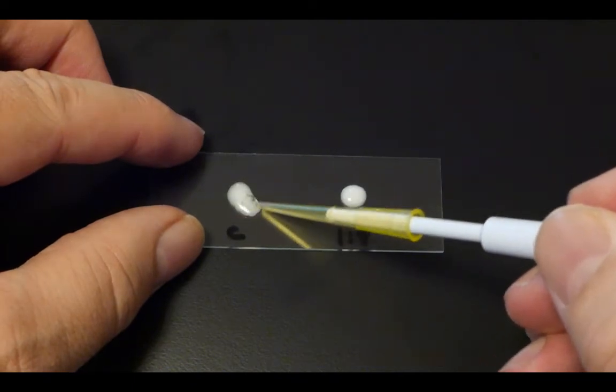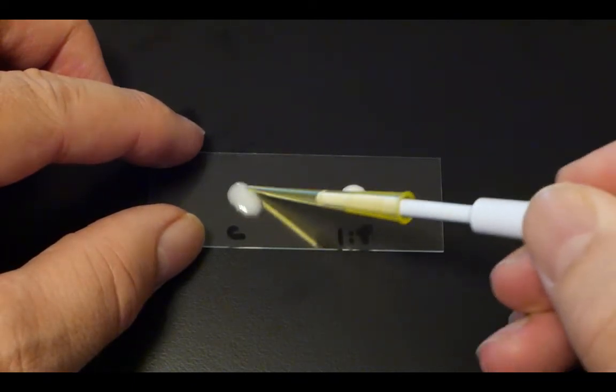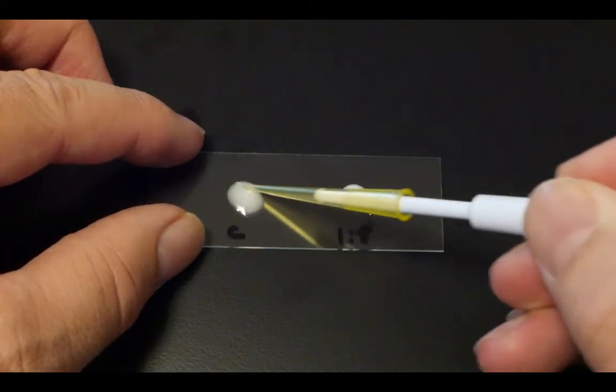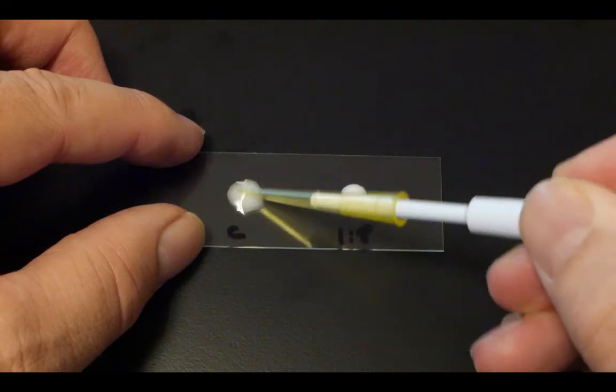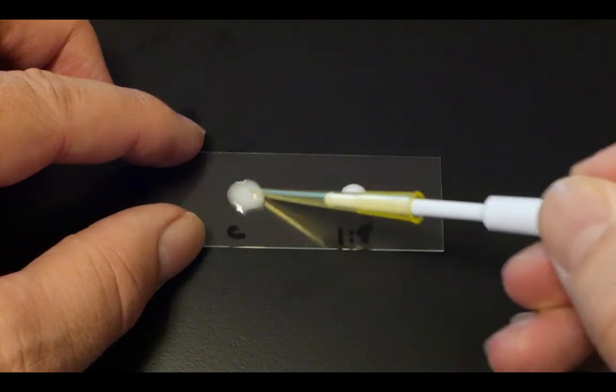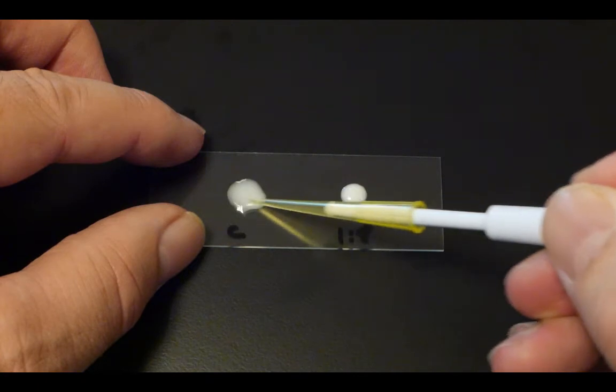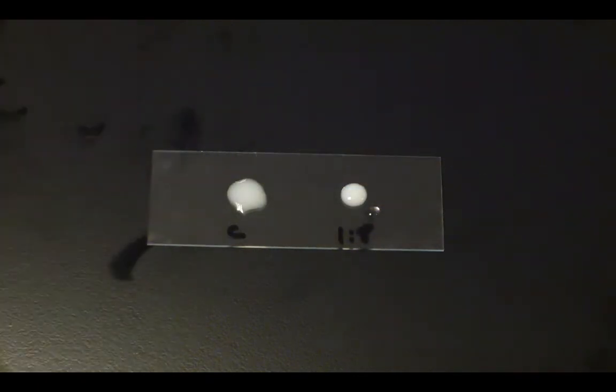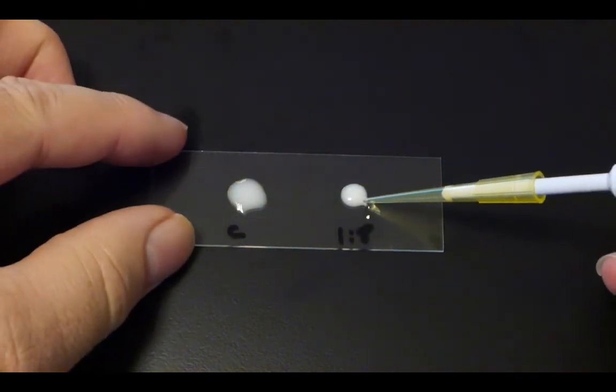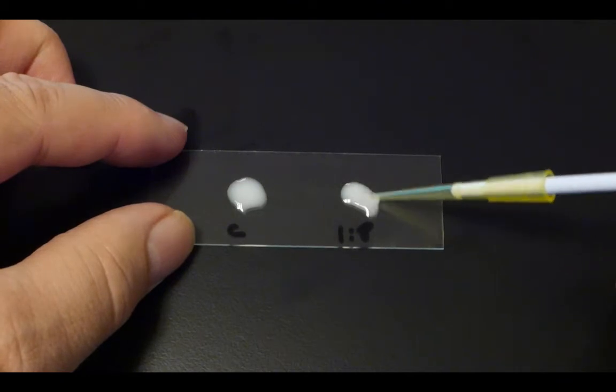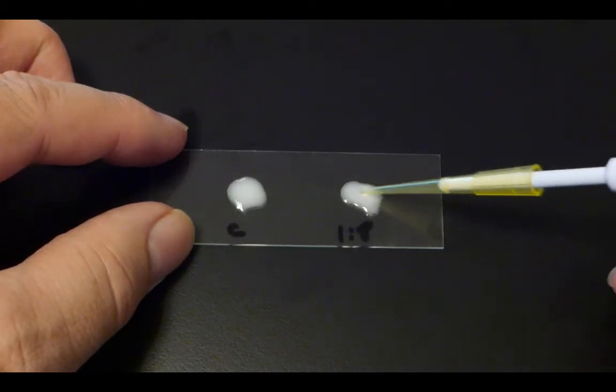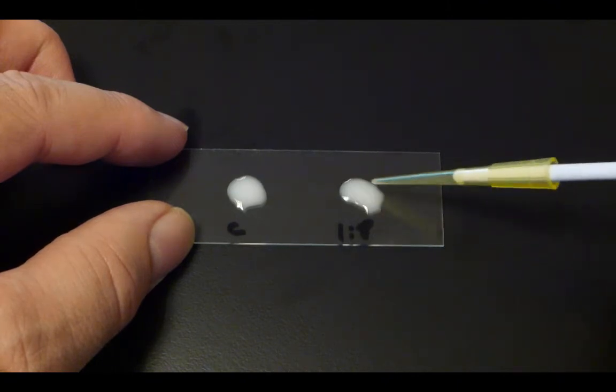Next using a clean pipette tip mix the latex beads with the sample. Make sure everything's thoroughly mixed, change tips and then mix the next sample with the beads. Try not to spread the drop out too much. Again make sure the sample is thoroughly mixed.